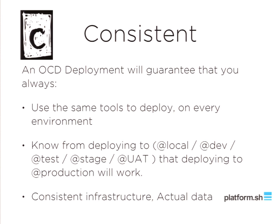The nice thing about having that consistency is that you have portability across your developers — there's no unique deployment workflow. You don't have one person who's used Puppet, another who's used Ansible, another who knows Chef inside and out. You just have developers using a tool native to their own day-to-day existence and to the development workflow you've set up as a team: Git push. Consistent also means using the same tools to deploy on every environment, knowing that deploying from one environment to the next is done the same way and has the same result.